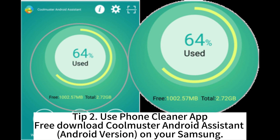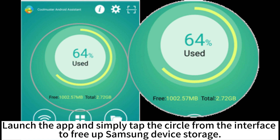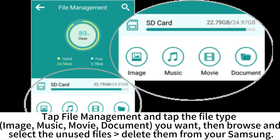Tip 2: Use a phone cleaner app. Free download Coolmaster Android Assistant on your Samsung. Launch the app and simply tap the circle from the interface to free up Samsung device storage. Tap File Management and tap the file type — image, music, movie, or document — you want, then browse and select the unused files and delete them from your Samsung.